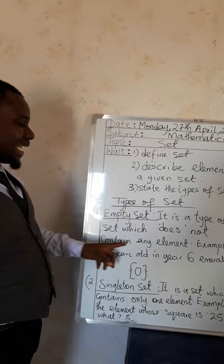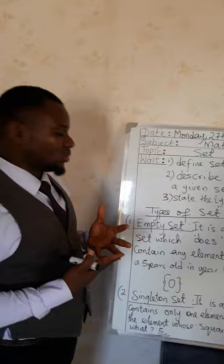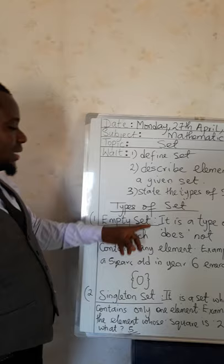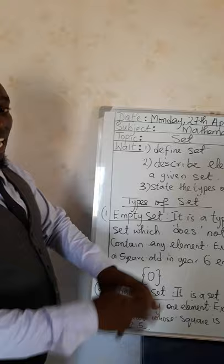Example: a 5-year-old in Year 6. It is not possible — all the people in Year 6 are above 5 years of age. So it shows that the number of elements in that particular set is zero. It is empty.